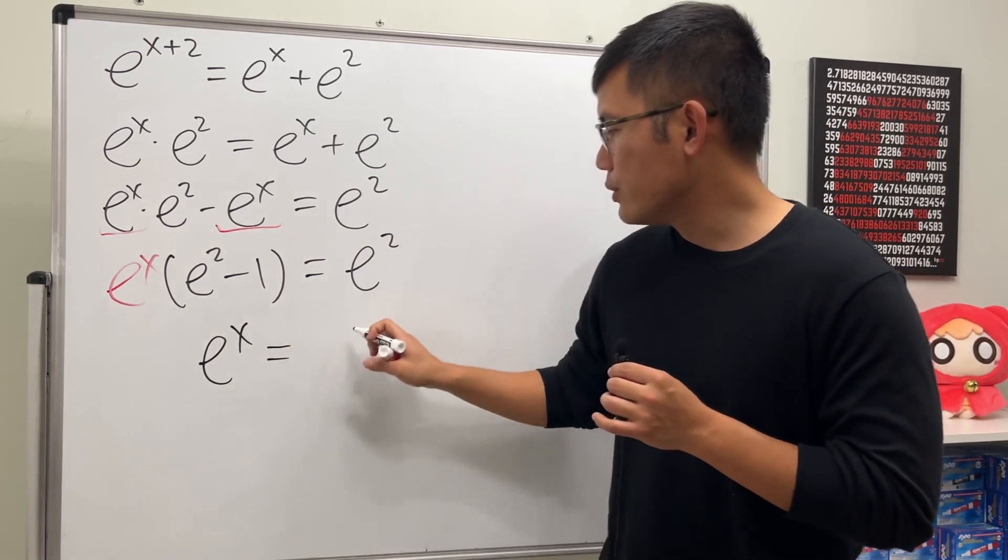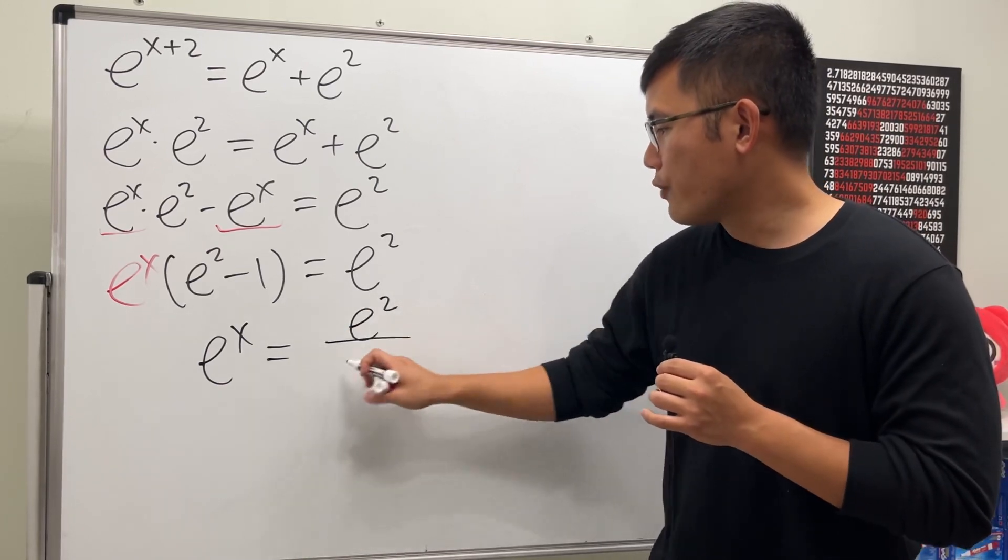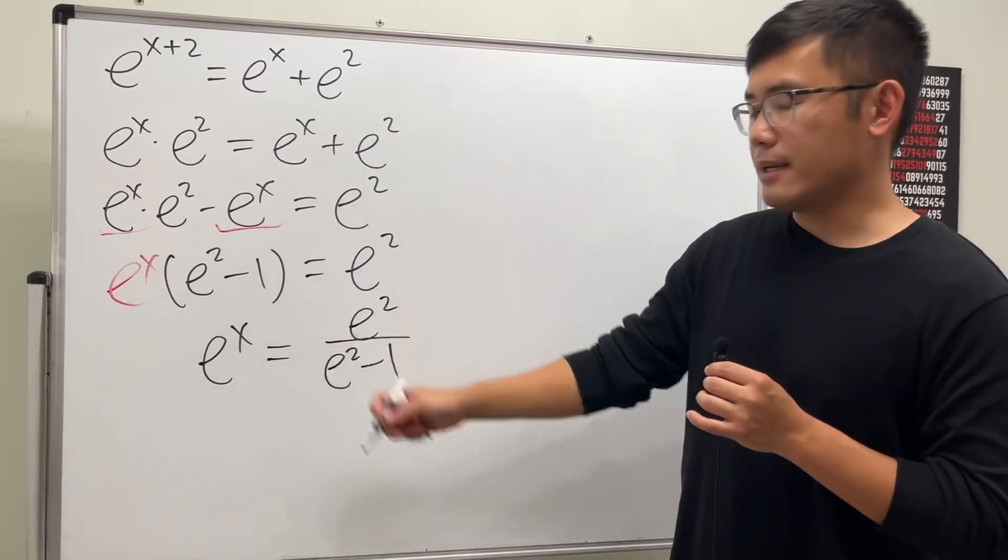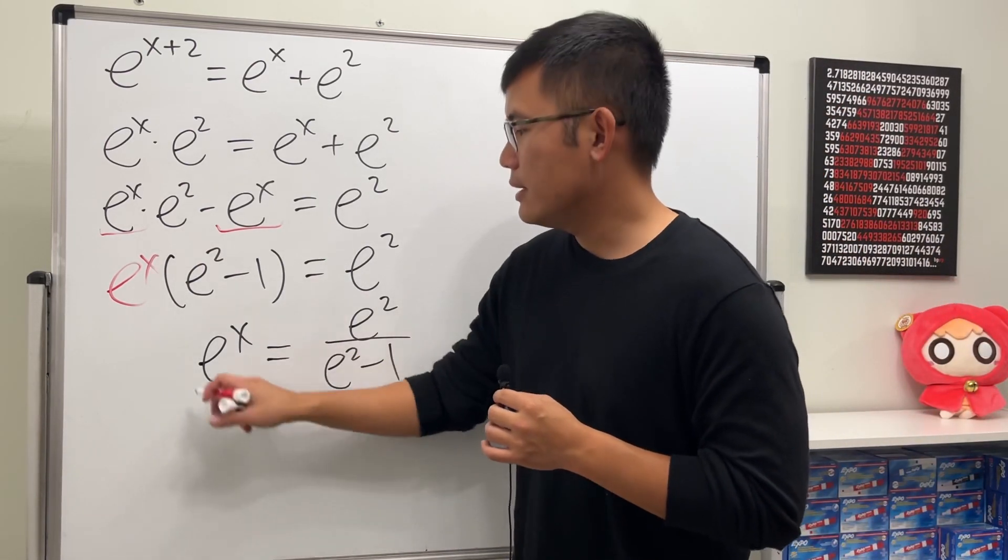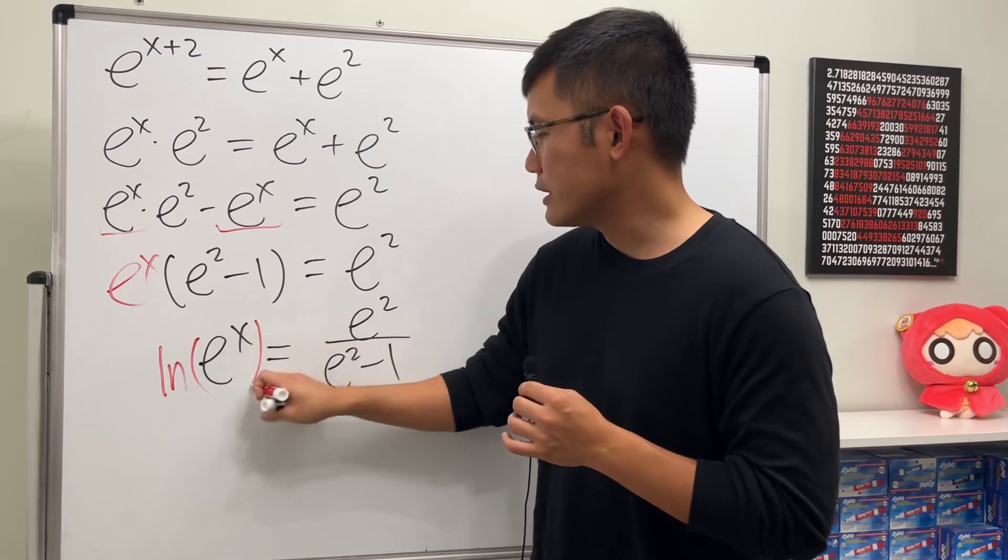Now we just have to solve for x, which is in the exponent. To do so, we can take the natural log on both sides. That way this and that can cancel, and ladies and gentlemen, x is equal to this.